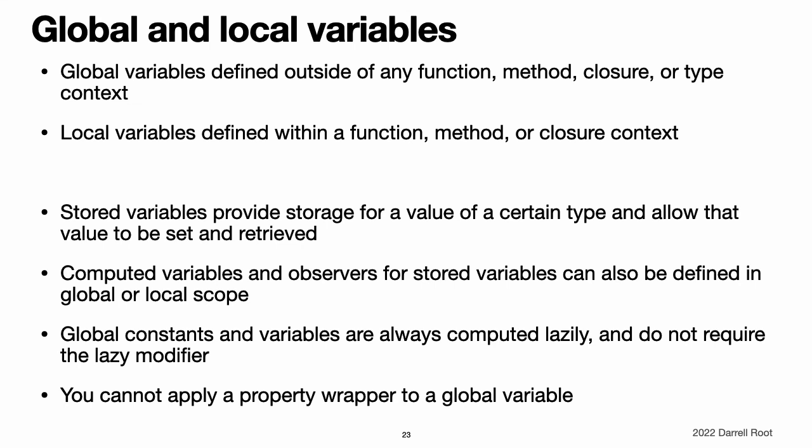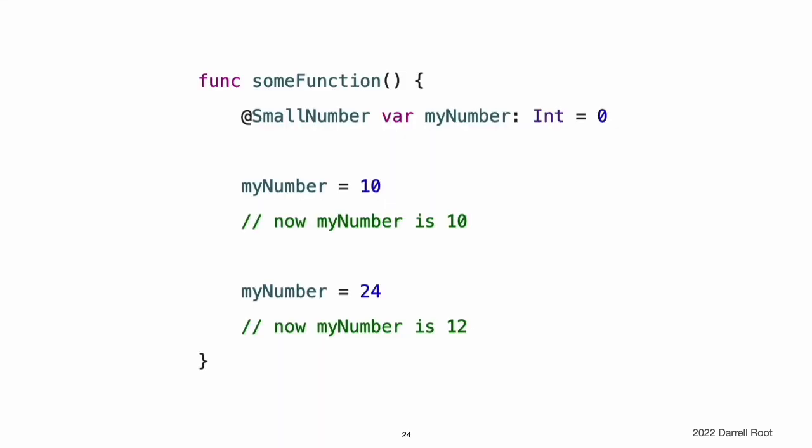However, you can also define computed variables and define observers for stored variables in either a global or local scope. Computed variables calculate their value rather than storing it, and they are written in the same way as computed properties. Global constants and variables are always computed lazily in a similar manner to lazy stored properties. Unlike lazy stored properties, global constants and variables do not need to be marked with the lazy modifier.